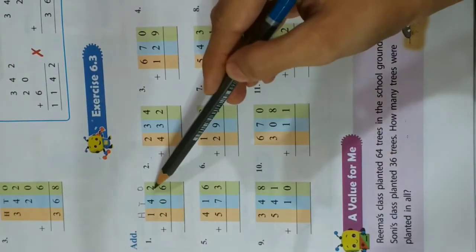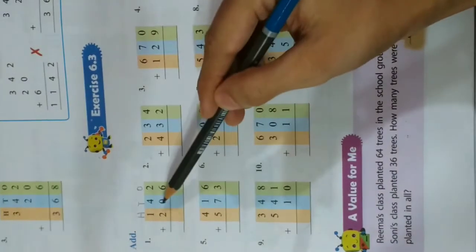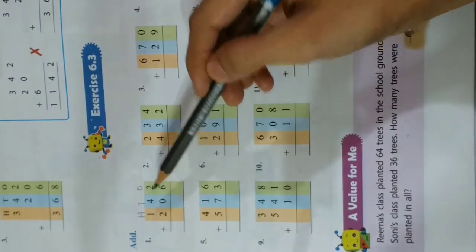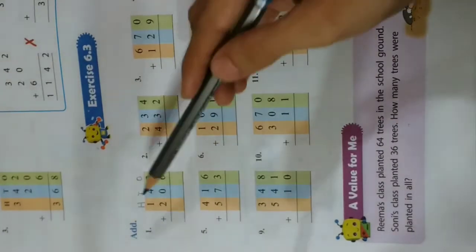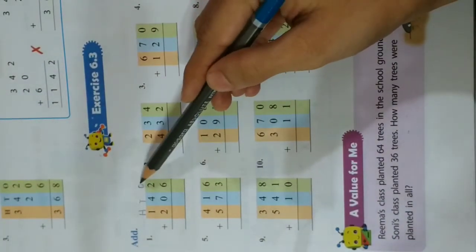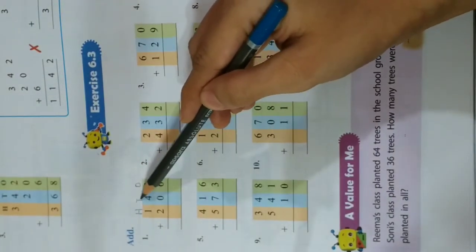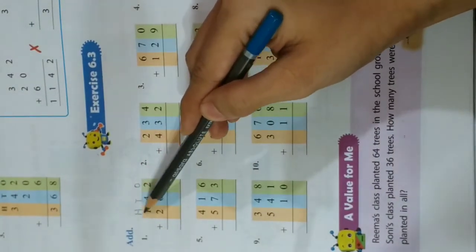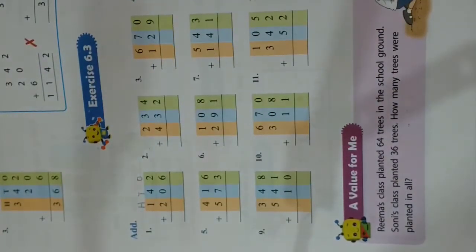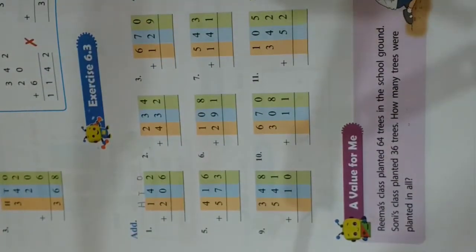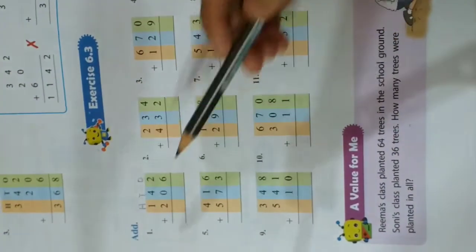142 and 206. We will begin by adding the numbers at ones place, then we will go to tens place, and then we will go to hundreds place. This is also very simple. So let's start with the numbers at ones place.